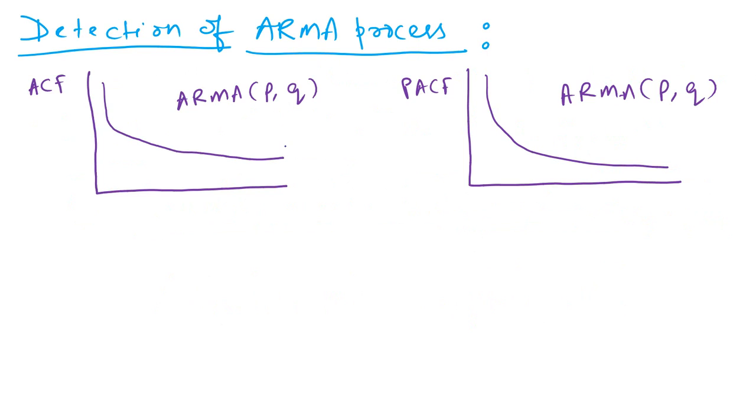How do we detect an ARMA process? For an ARMA process the ACF function as well as the PACF function both exhibit a geometrically declining curve, declining ACF and PACF.